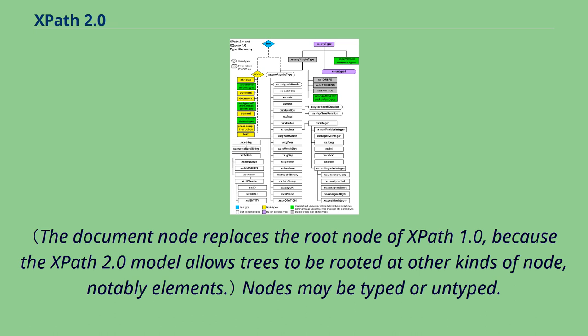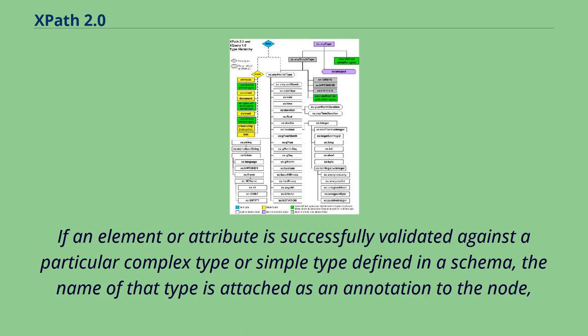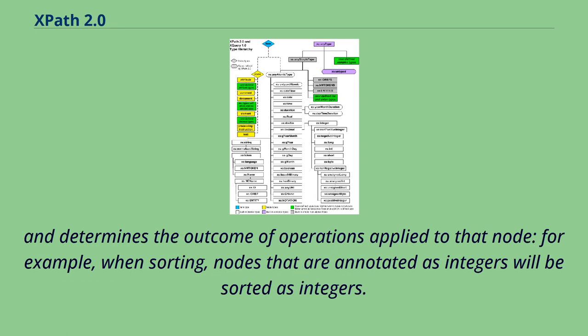Nodes may be typed or untyped. A node acquires a type as a result of validation against an XML schema. If an element or attribute is successfully validated against a particular complex type or simple type defined in a schema, the name of that type is attached as an annotation to the node and determines the outcome of operations applied to that node.